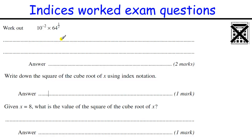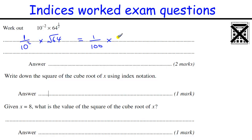10 to the minus 2 times 64 to the one-half. The minus means 1 over 10 squared, which is one-hundredth. 64 to the one-half is the square root of 64, which is 8. So one-hundredth times 8 is 8 hundredths, which simplifies to 2 over 25. You could also write it as 0.08 — either would be fine.